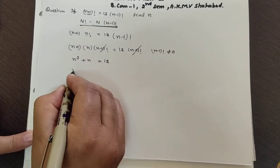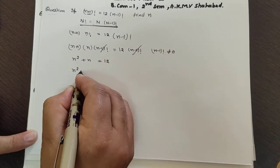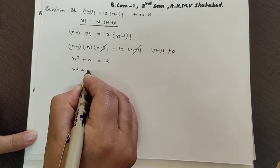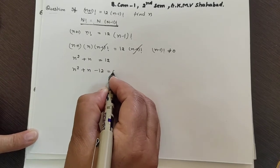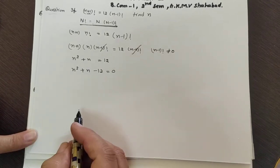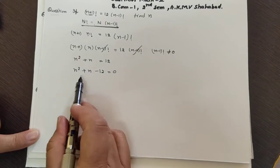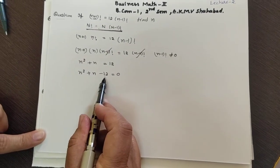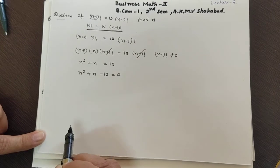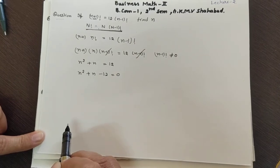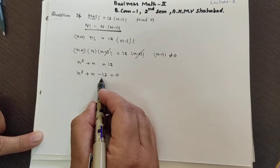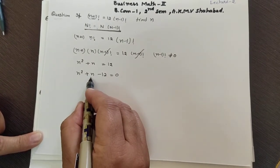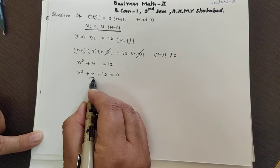After canceling, we get n²+n = 12. Taking 12 to the left hand side: n²+n-12 = 0. Now we need to factorize this and find the value of n.